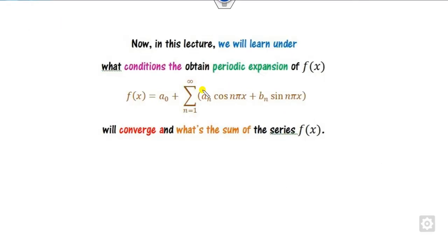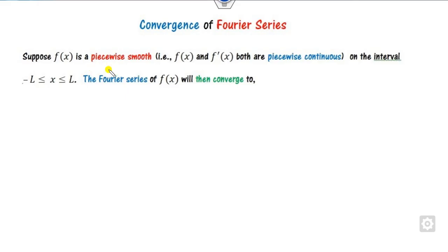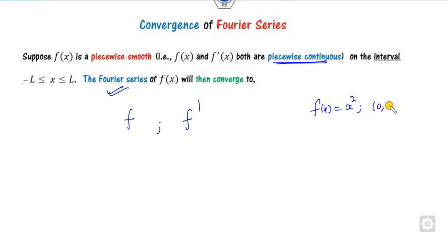Our target is to see under what conditions the series converges and, when it does, what will be the sum of the series. The convergence condition is simple: whenever f and its derivative are both piecewise continuous, the Fourier series will converge. For example, if the function is x² over the domain [0,1], its derivative is 2x — also a polynomial and piecewise continuous — so the Fourier series corresponding to this will definitely converge.